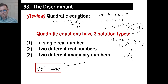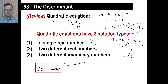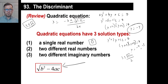The discriminant will tell us what types of answers we're going to have. A single real number means the discriminant is going to be 0. In other words, you'd have an answer like 3 plus or minus the square root of 0 — and whether it's plus or minus, it's still going to be 0, so your answer is just 3, or 3 over 2. You get one answer. So if the discriminant is 0, you will get one single real number.